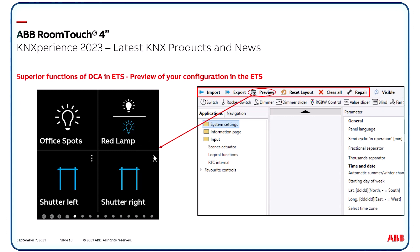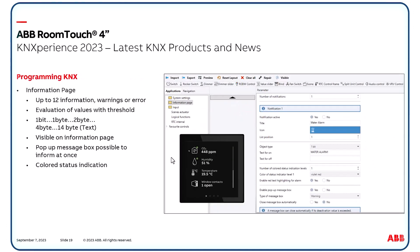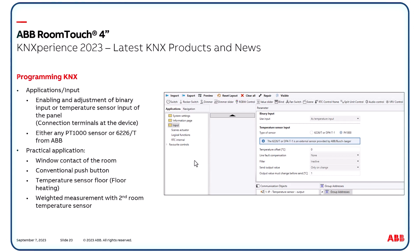Please note that KNX telegrams are not sent in preview mode. The information page as an additional page is a good option to show up to 12 information items, warnings or errors, each assigned to different icons. Values can be evaluated by adjusting thresholds. In case of an essential fault, a pop-up message box in red can appear on the screen to inform immediately about the situation. Data types supported are 1-bit, 1-byte, 2-byte, 4-byte and even 14-byte text information. A further option is to connect directly to the Room Touch either a binary contact or a temperature sensor. Parameters in the ETS can be adjusted accordingly. Practical applications include connection of a window contact in the room or an additional conventional switch or push button, a connected temperature sensor on the floor for monitoring in case of a floor heating system, or a weighted measurement with a second room temperature sensor for room temperature control.